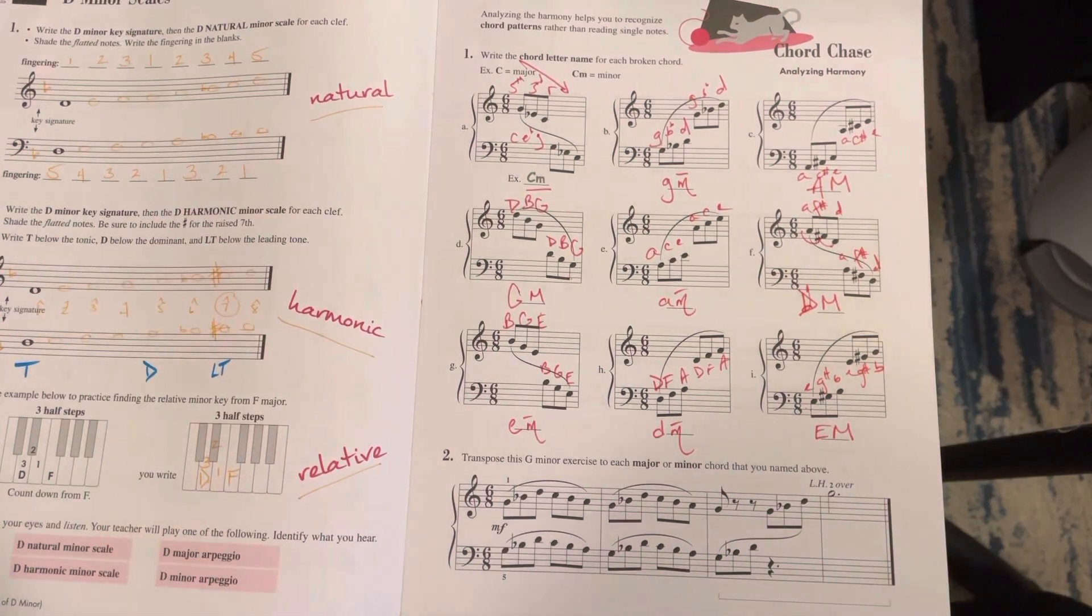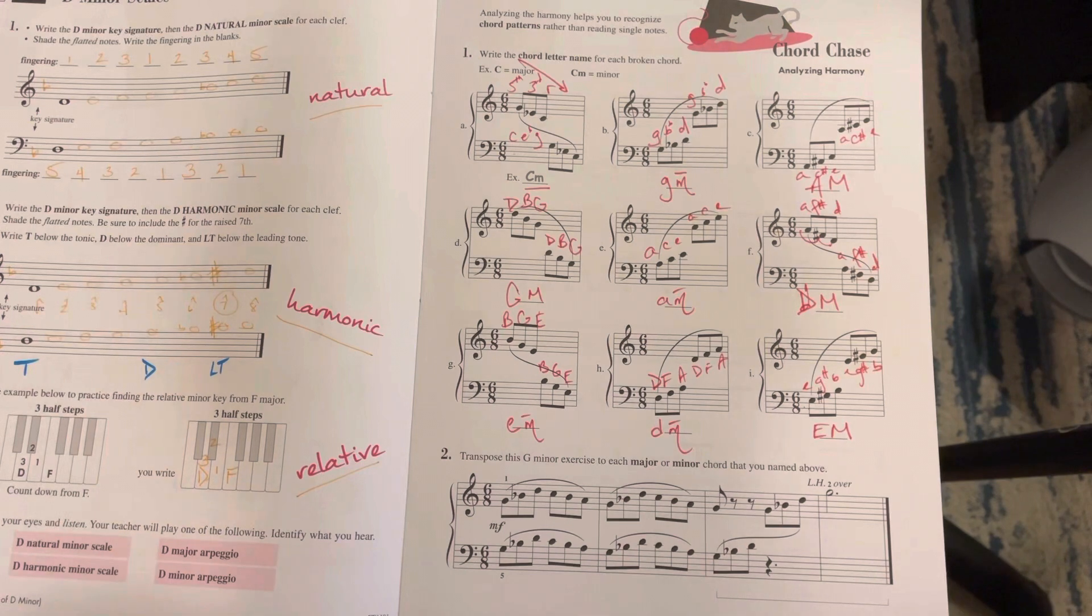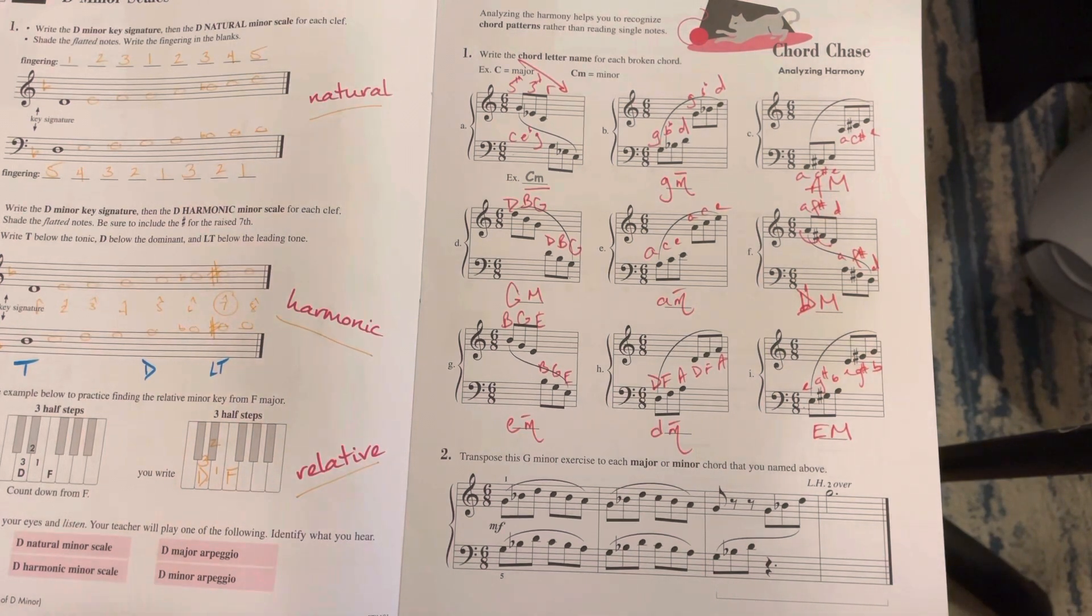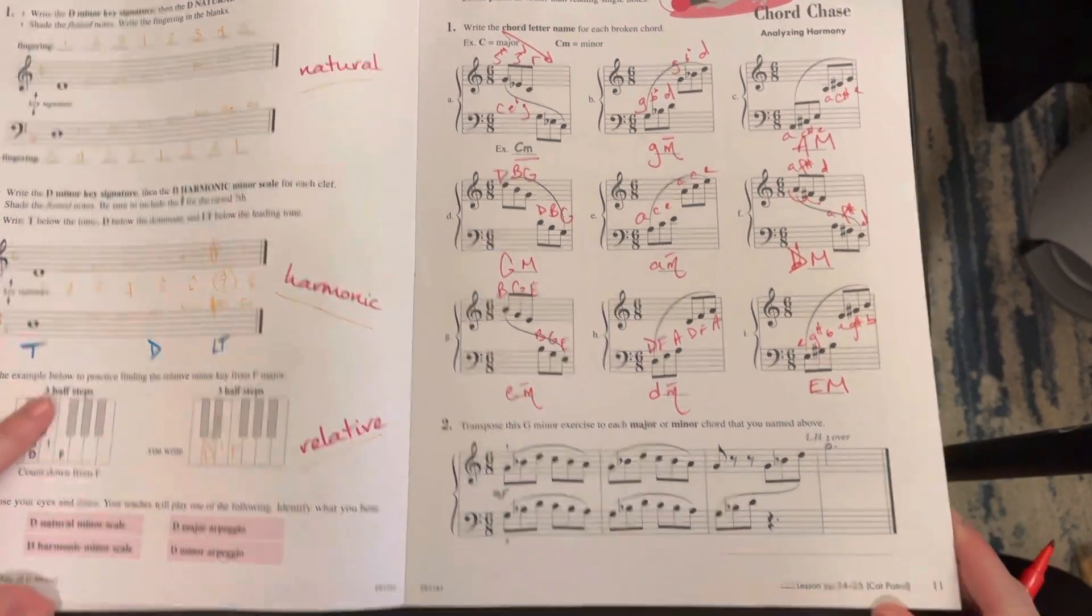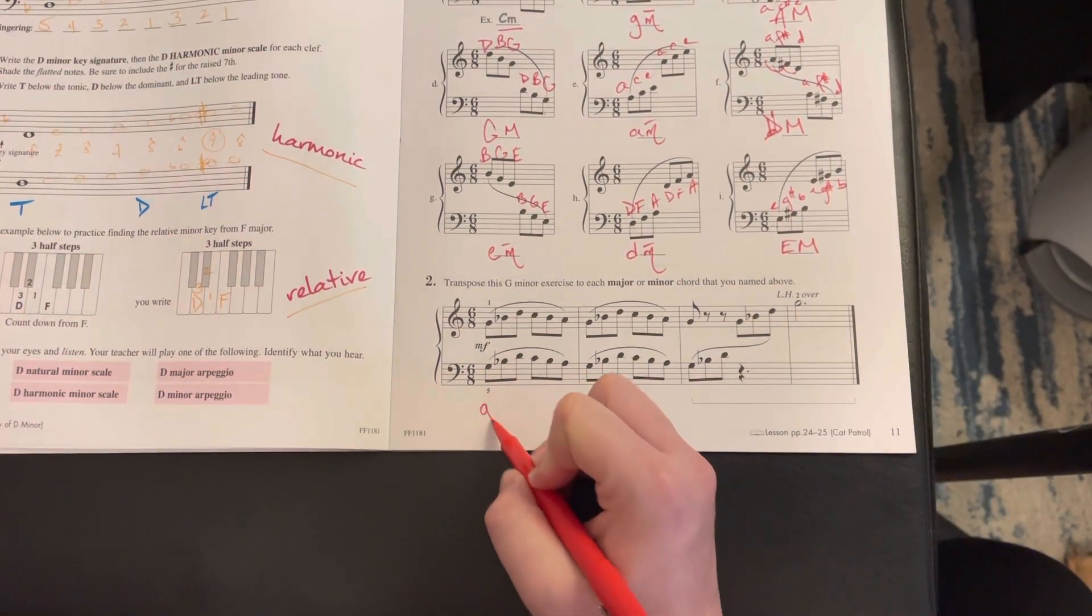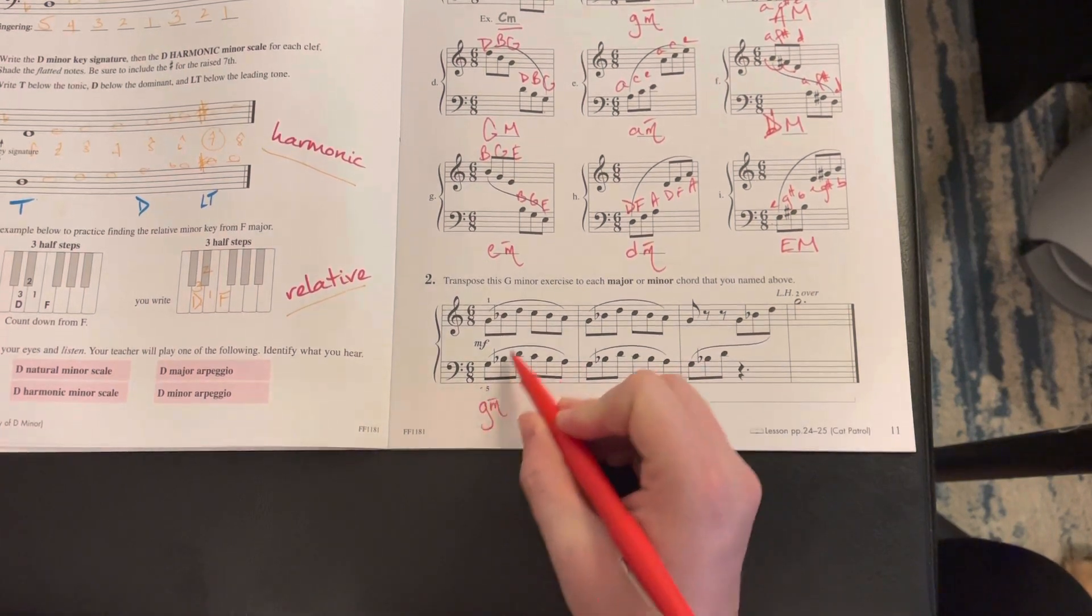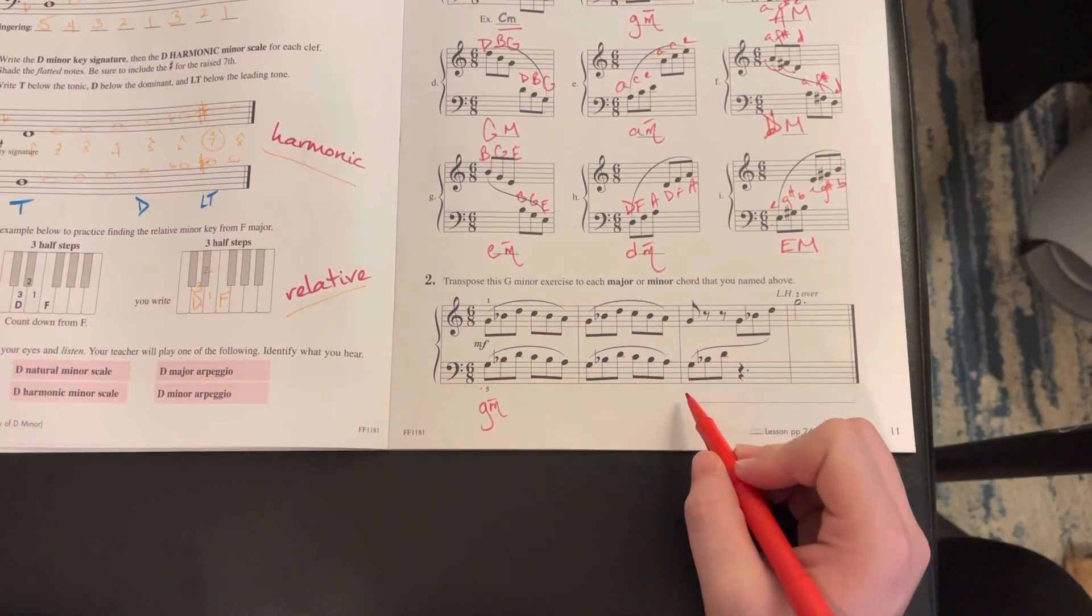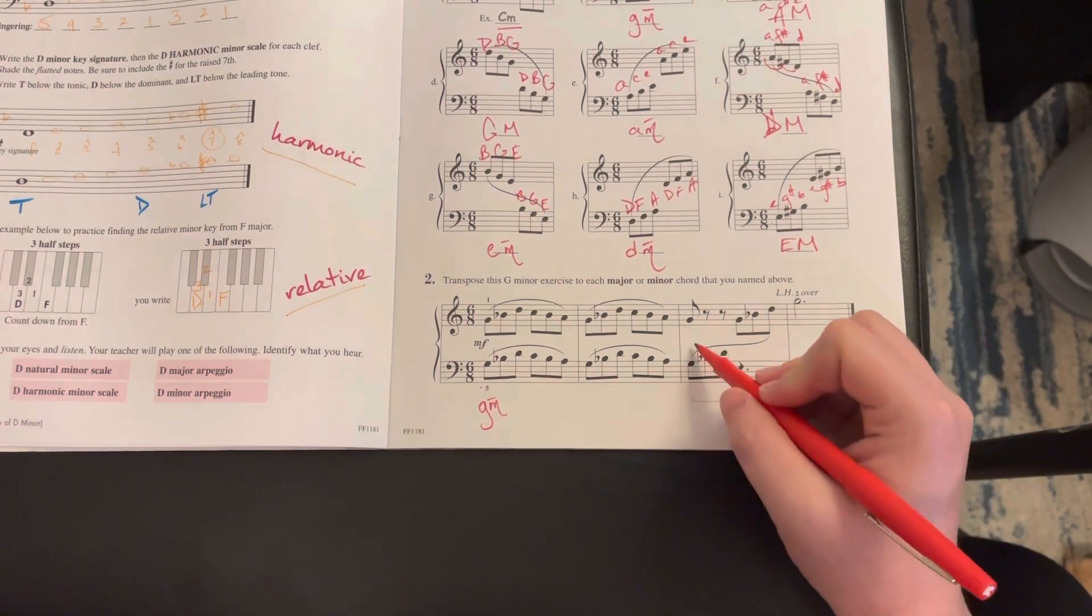The next example says transpose this G minor exercise to each major or minor chord that you have named above. So you're just going to take this exercise, and you can see that this is just a G minor broken chord here, played twice in a row, and then an arpeggio.